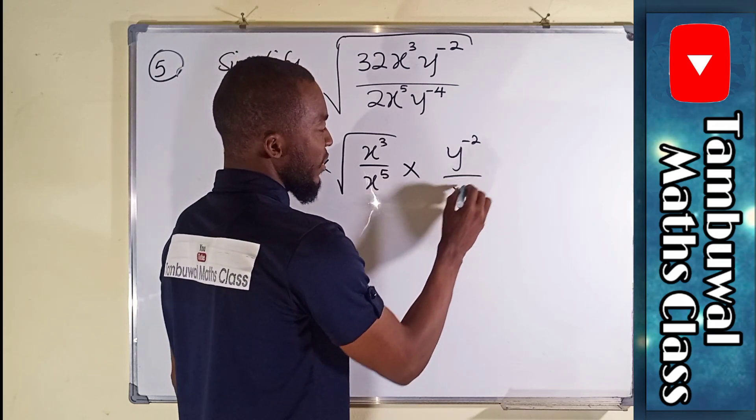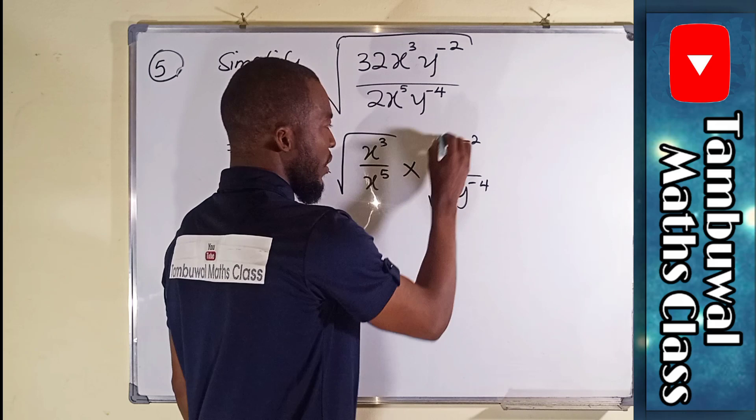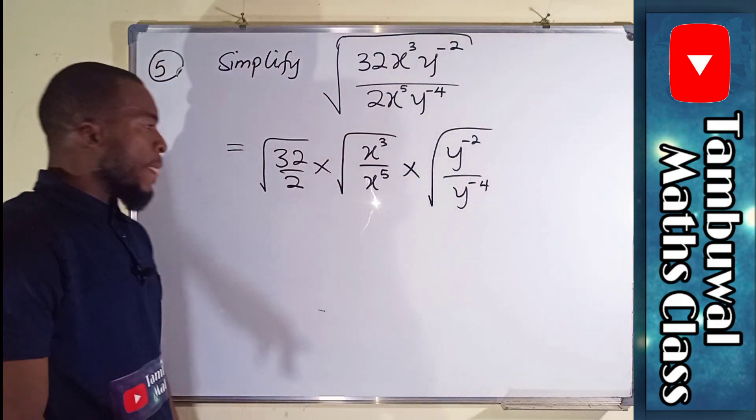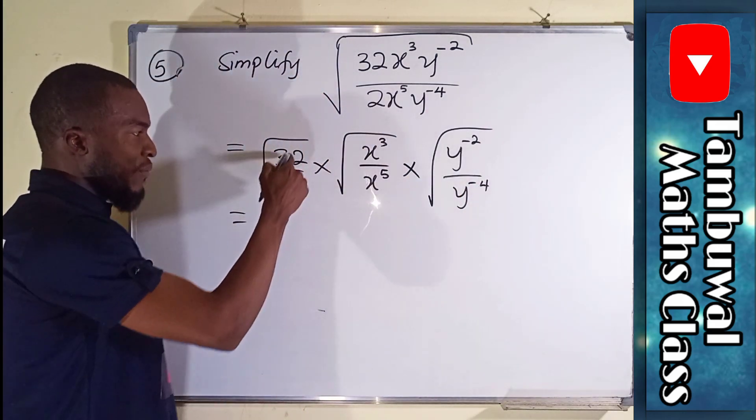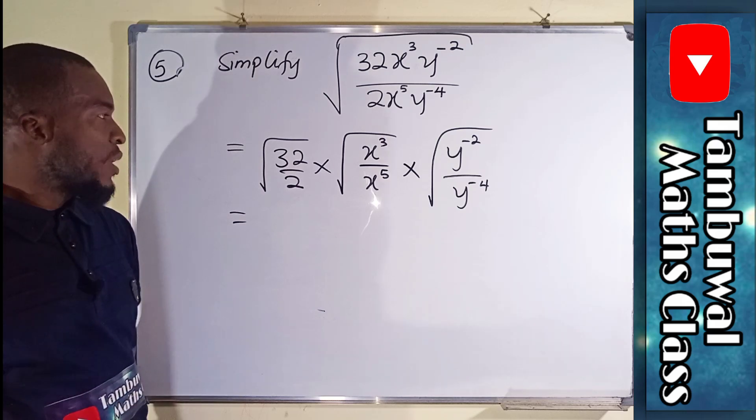And lastly we have y to the negative 2 over y to the negative 4, also in square root. From here we have 32 divided by 2 is 16, so we have square root of 16.